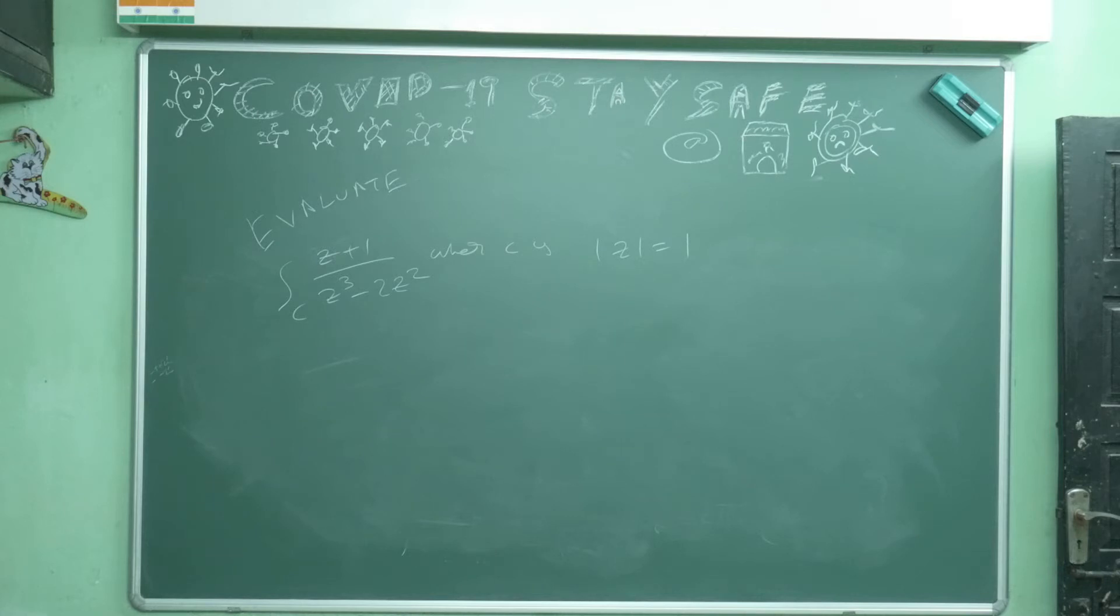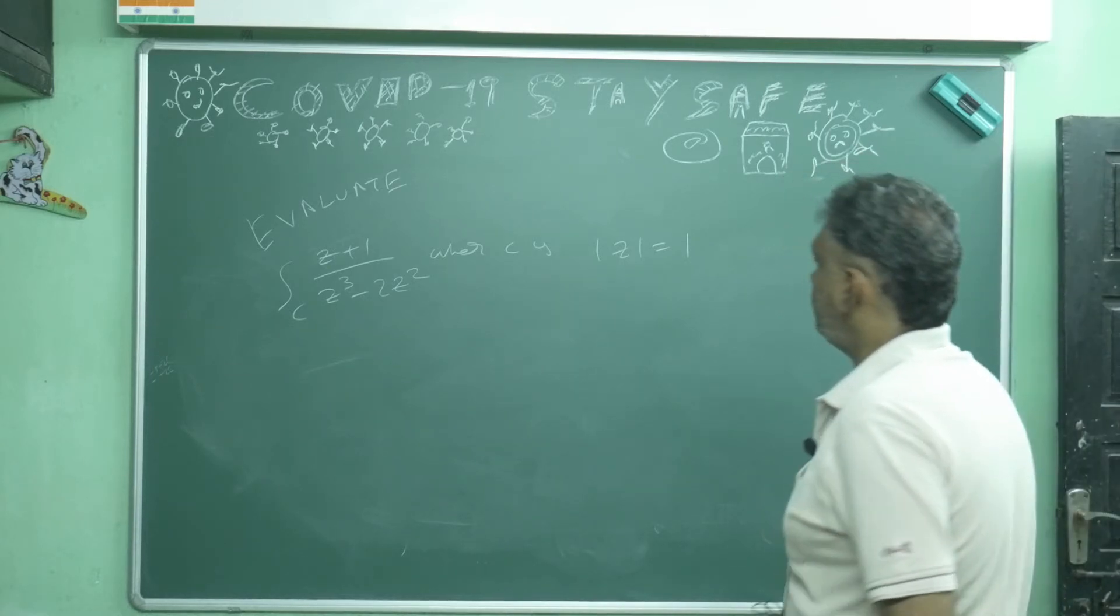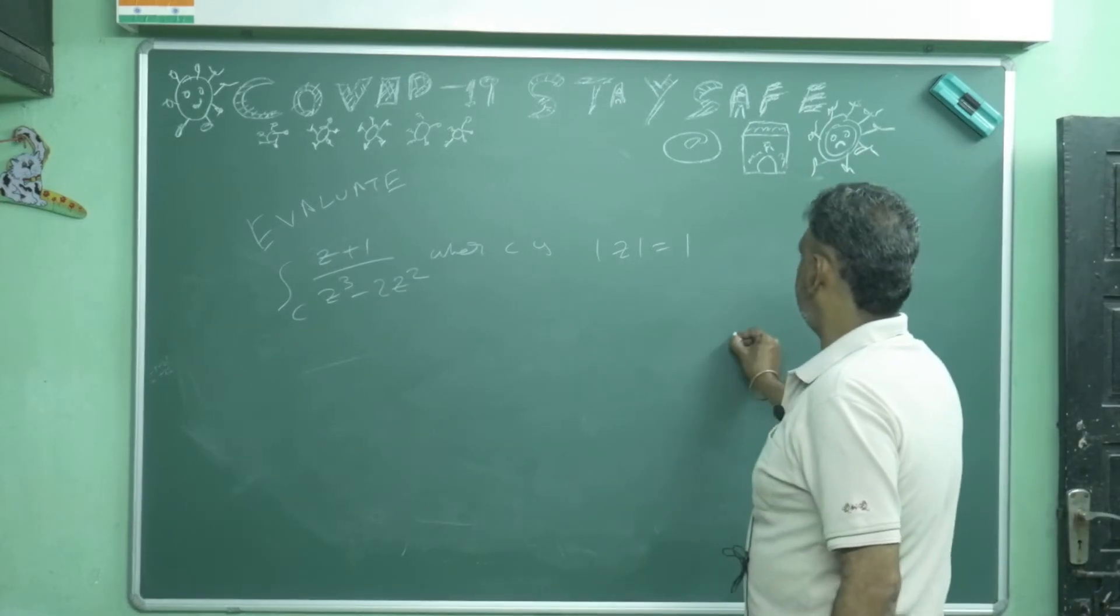Where c is modulus equal to 1. Many people will do partial fraction a by z, b by z square, c by z minus 2. I don't want to do so. I will do it in one stroke. Actually z equals 1 means center at 0.